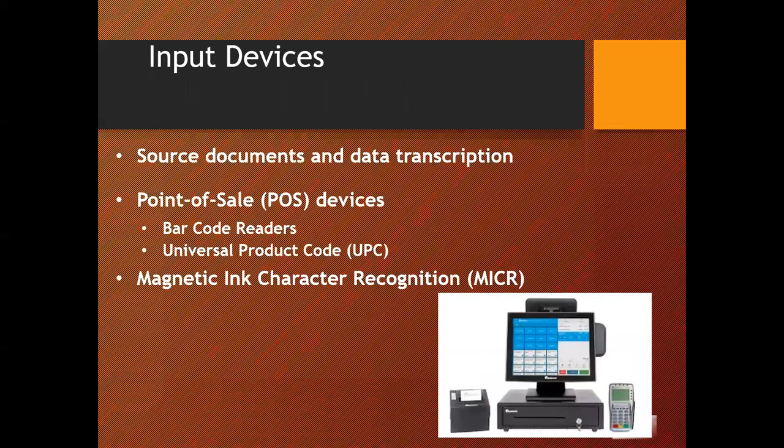The next slide will discuss input devices. The starting point of the input-processing-output cycle, especially when processing accounting data, is input. Even where the amount of data is small, most accounting information systems require input methods and procedures that ensure complete, accurate, timely, and cost-effective ways of gathering and inputting accounting data.